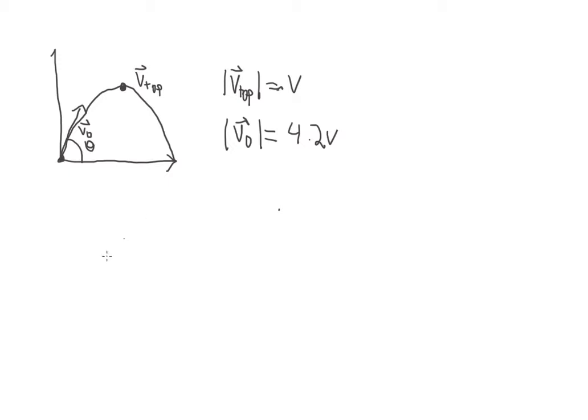The other thing we know is that at the top the velocity vector is entirely in the x direction, so this is entirely vx. The other thing we know is that in parabolic motion, vx is a constant, so it never changes.